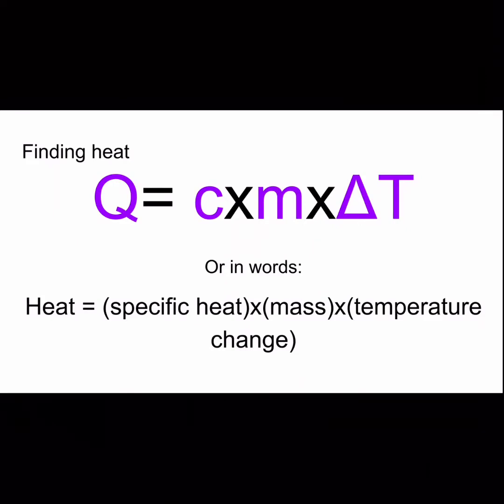A lot of times we're going to be looking for heat, which can be found as the letter Q. Here's our equation for finding heat: we're going to multiply specific heat times mass times the temperature change. That little triangle means a change in temperature.